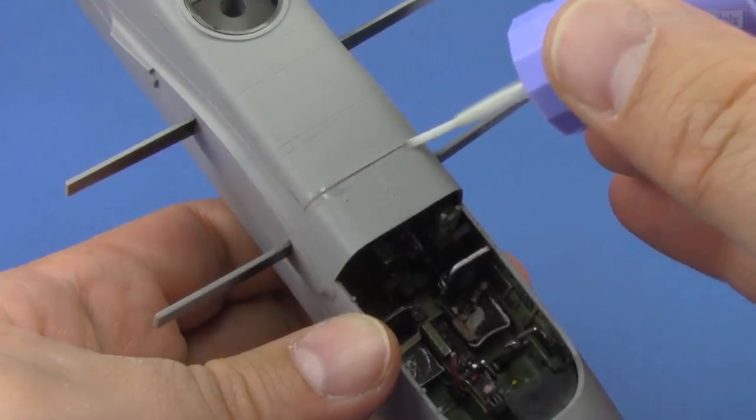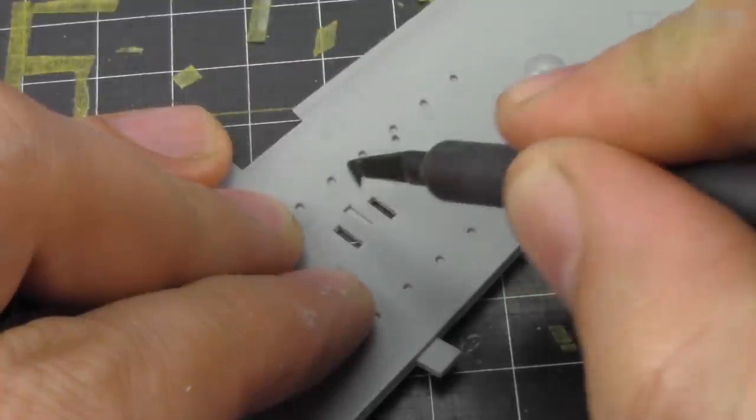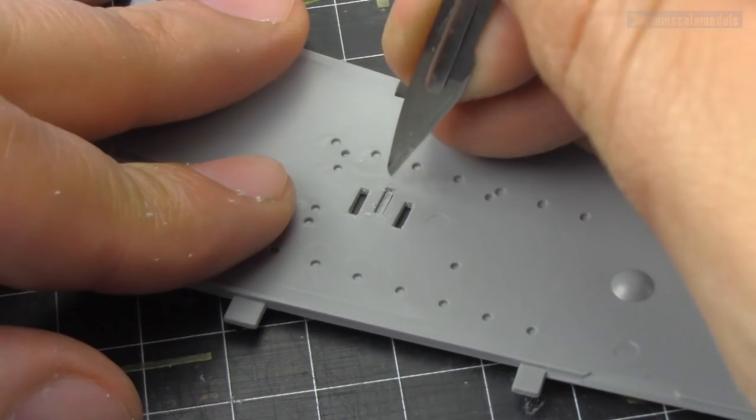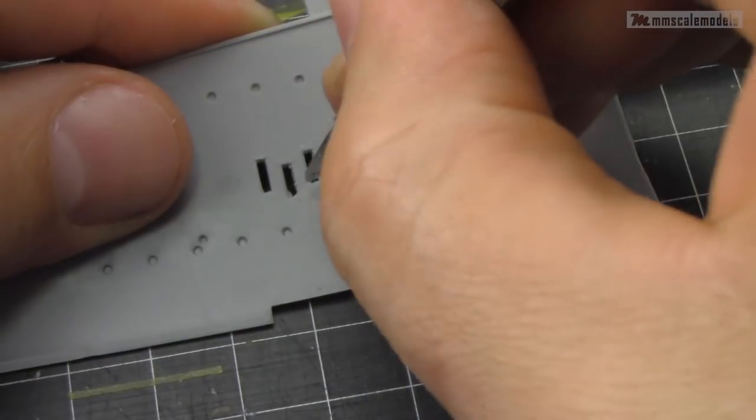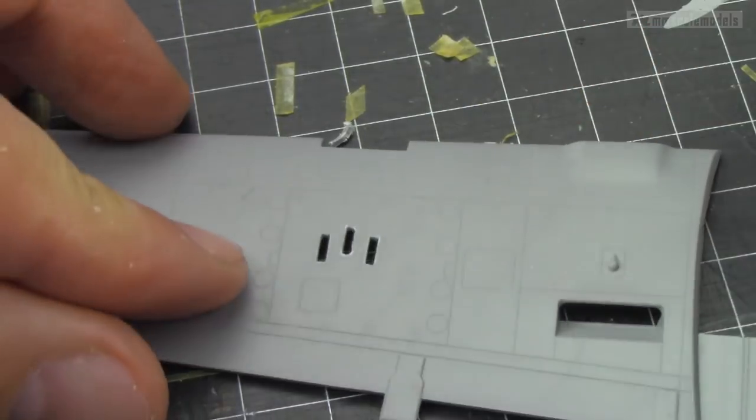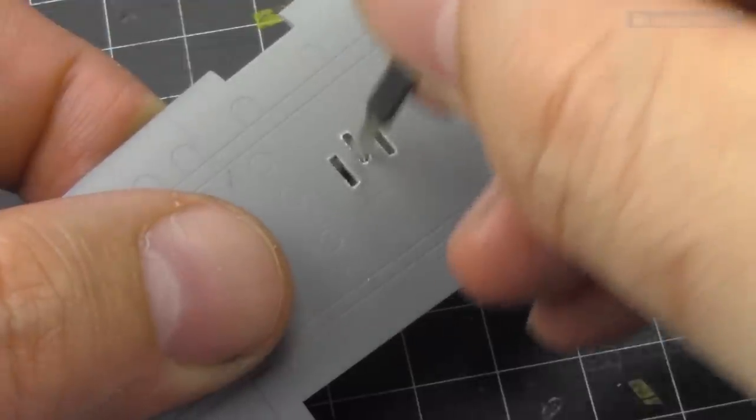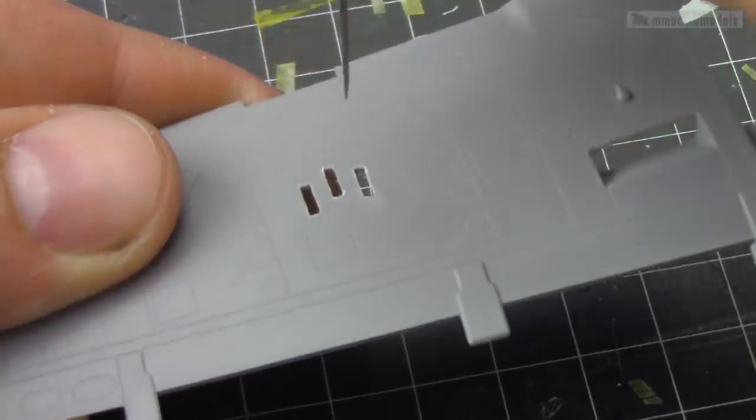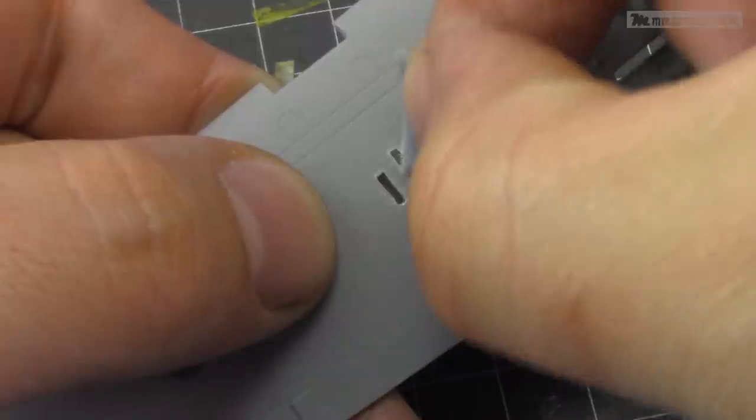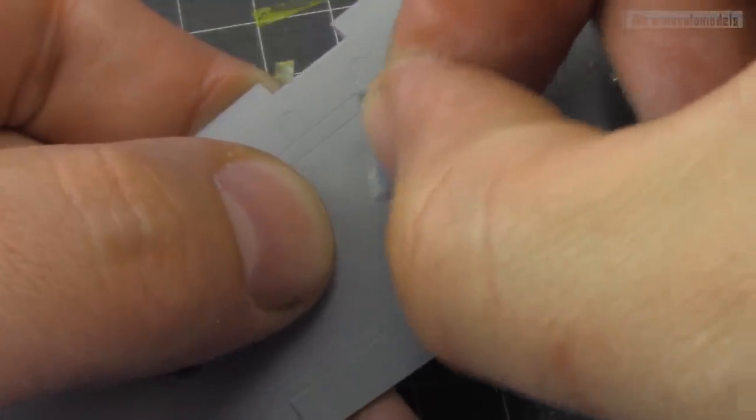When it comes to the wings assembly, we have another strange and not welcome decision. The shell ejection ports are molded shut and they have to be opened up. I guess that this has to do with the different variants once again. Luckily I have collected many tools that allow me to do this job, but it can never be as good as if they were opened up from the factory.